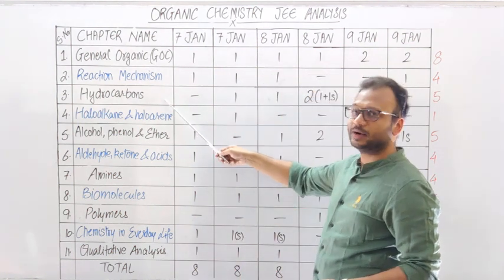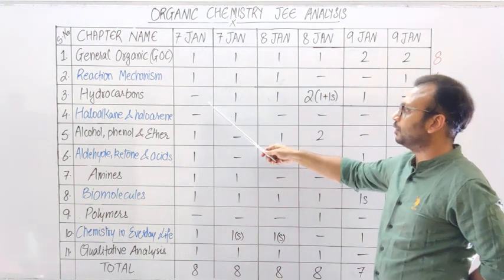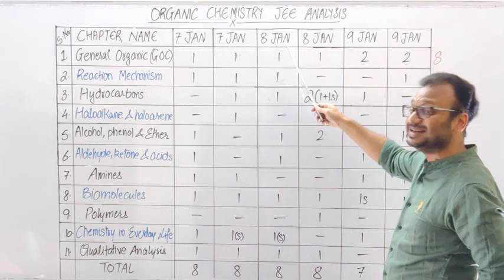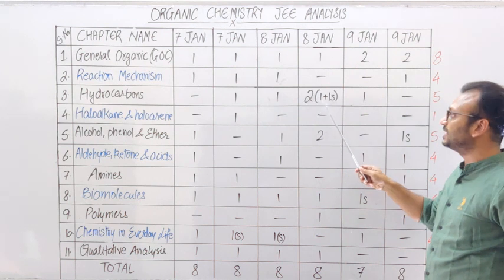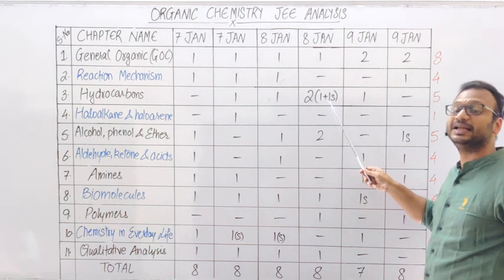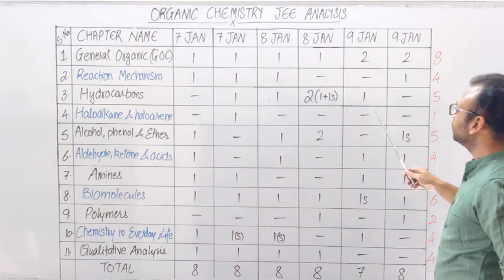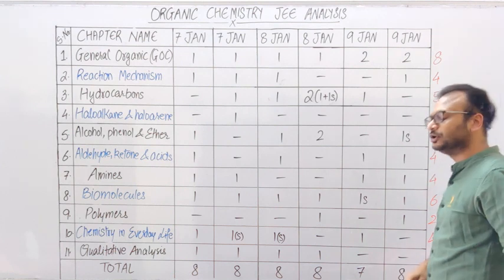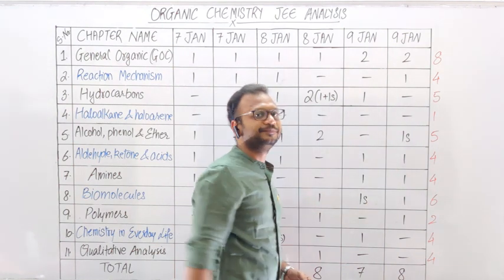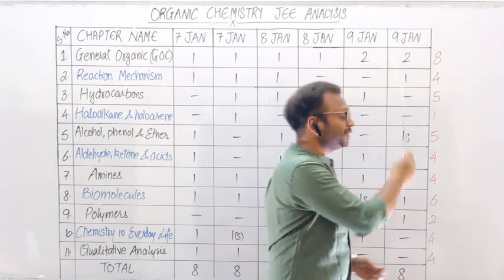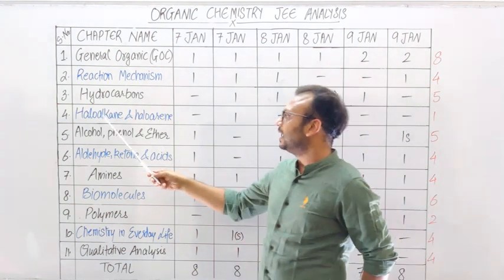Third chapter है Hydrocarbon। Hydrocarbon में 7th January Morning Shift में कोई question नहीं था, Evening Shift में 1 question था, 8th January Morning Shift में 1 question, Evening Shift में 2 questions — जिसमें से एक normal question था और एक integer type का subjective question था। 9th January Morning Shift में 1 question, Evening Shift में कोई question नहीं था। Total 5 questions — यानि Reaction Mechanism के comparison में Hydrocarbon ज़्यादा important है।